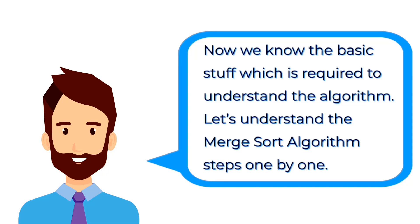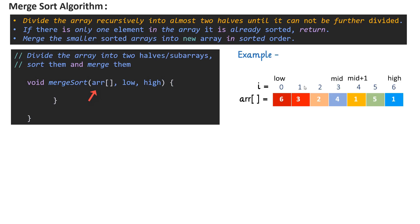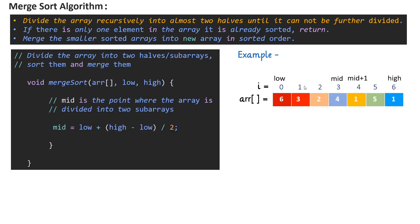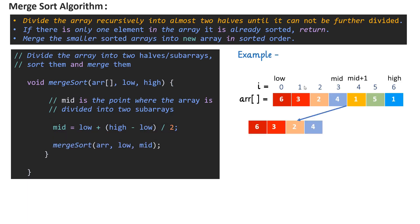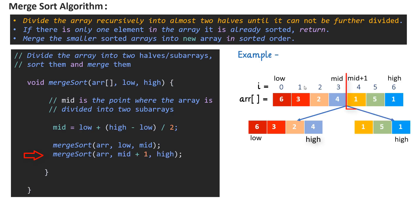Let's understand the merge sort algorithm steps one by one. We have a method named merge sort which accepts three parameters: input array, start index or low, and end index or high. As we need to divide the array into almost two halves, we will use this formula to calculate the mid. Now we know the mid, let's divide the array recursively. We will call the same method again but with different parameters. After dividing the array, our mid will become high for the left half. Then call the same recursive function again for the right half of the array with mid plus one as low.